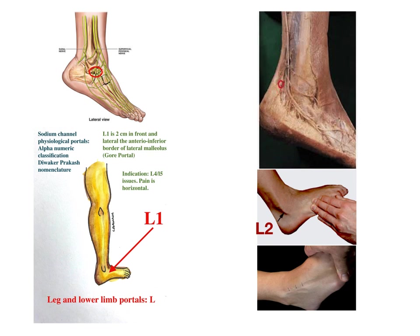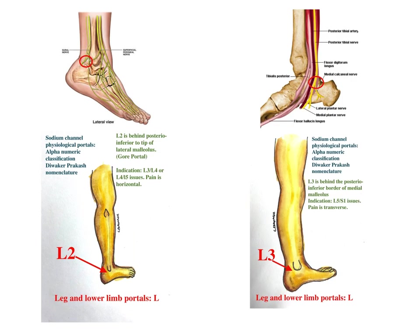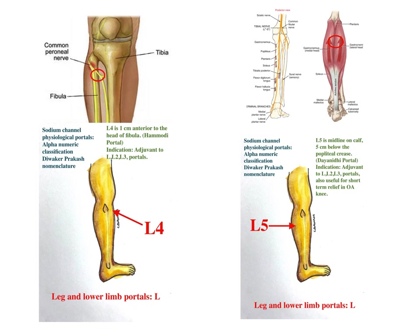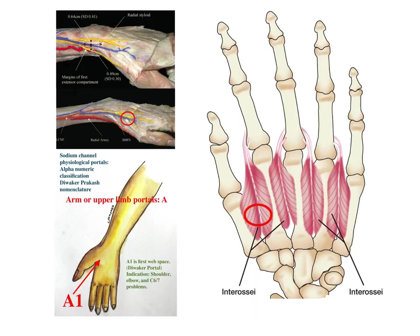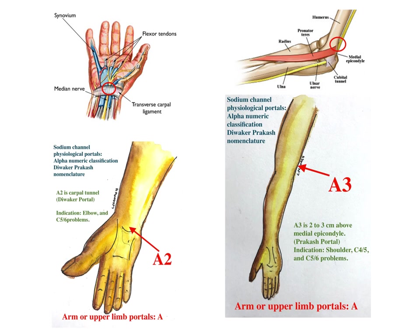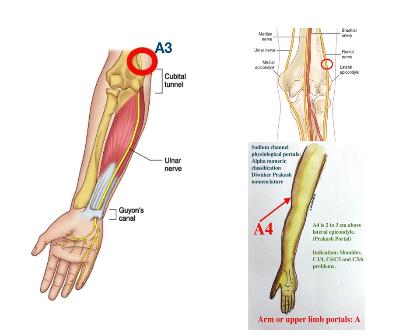The gates have been named alphanumerically. Gate L1 is 2cm in front of the lateral anterior and inferior border of the lateral malleolus, called the Gore puddle. Gate L2 is just behind the lateral malleolus. Gate L3 is just behind the medial malleolus in the tarsal tunnel. Gate L4 is just below the head of the fibula, and L5 is posteriorly into the calf 4cm below the knee joint. A1 is in the first web space, A2 is in the carpal tunnel, A3 is infiltration around the median nerve, and A4 is infiltration around the ulnar nerve. These are the upper limb portals.